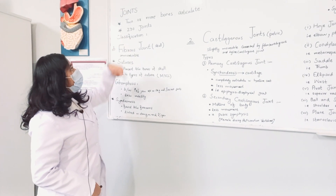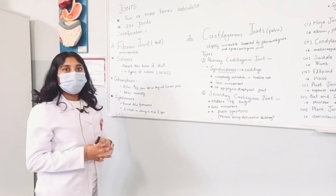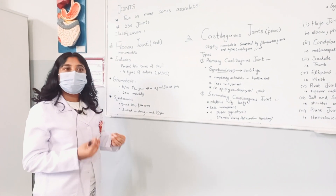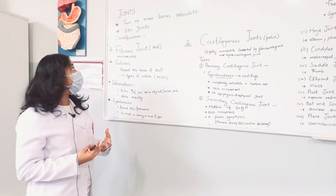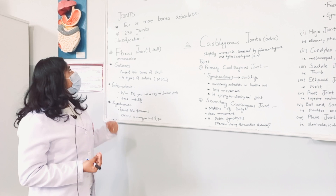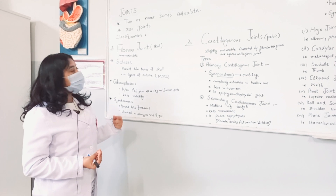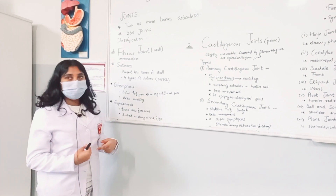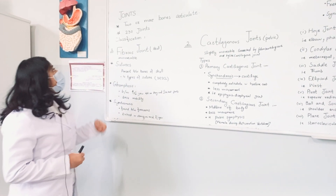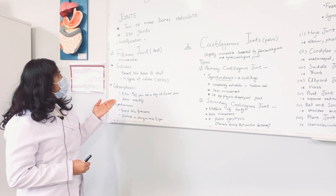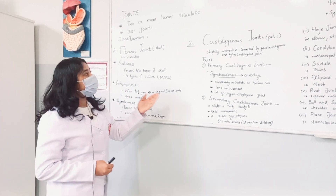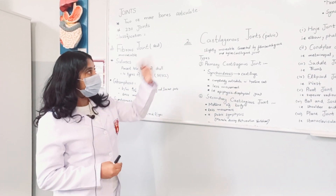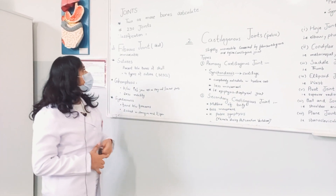Two or more bones articulate together to form what is called a joint. There are 230 joints in our human body. The classification of joints includes fibrous joints, cartilaginous joints, and synovial joints.